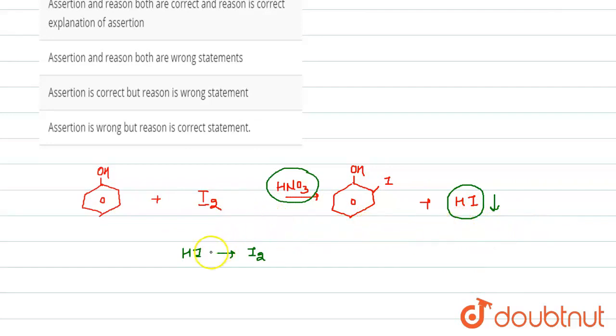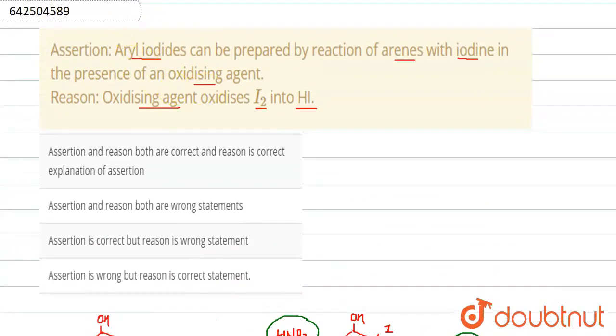That's why HNO3 is added such that excess HI gets converted into iodine. But, in this question, the reason given is opposite. Oxidizing agent oxidizes iodine into HI but actually it oxidizes HI into iodine. So, according to this, assertion is correct but the reason is the wrong statement.